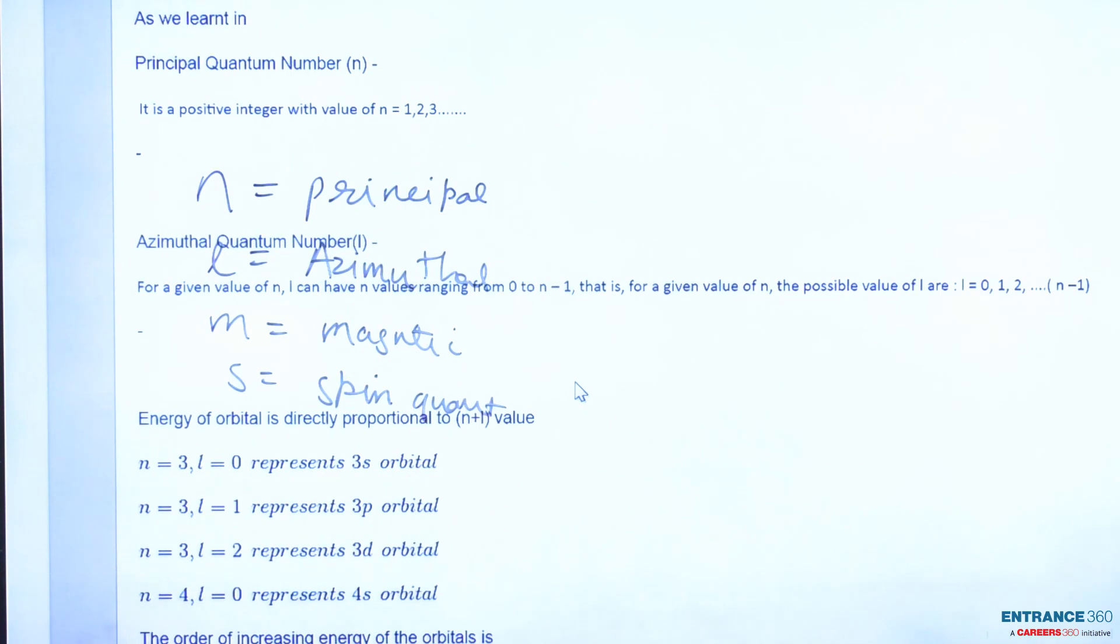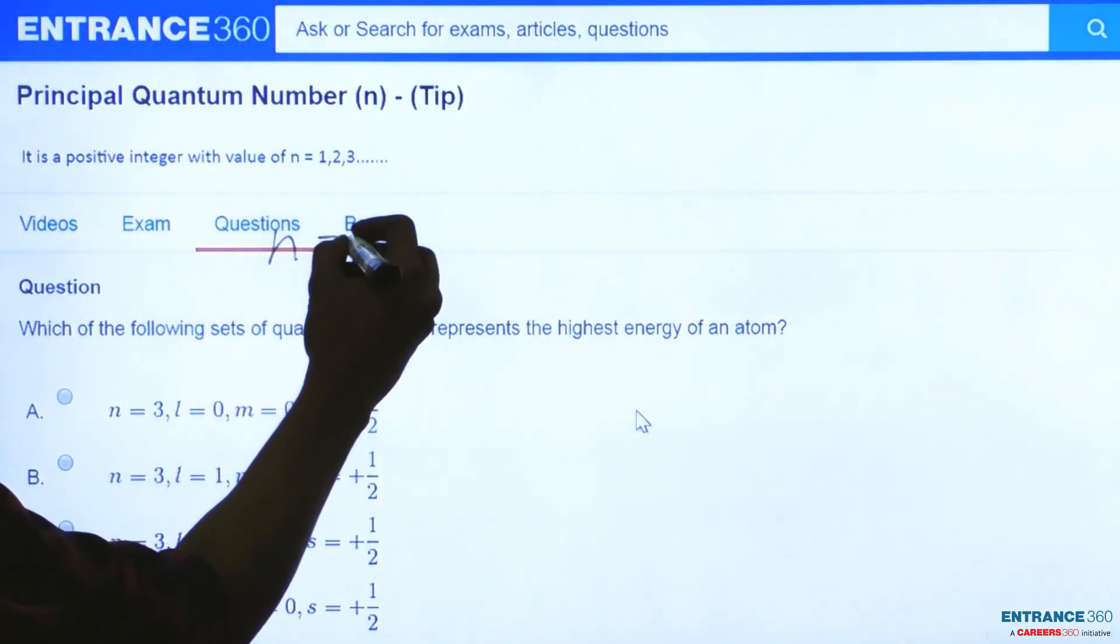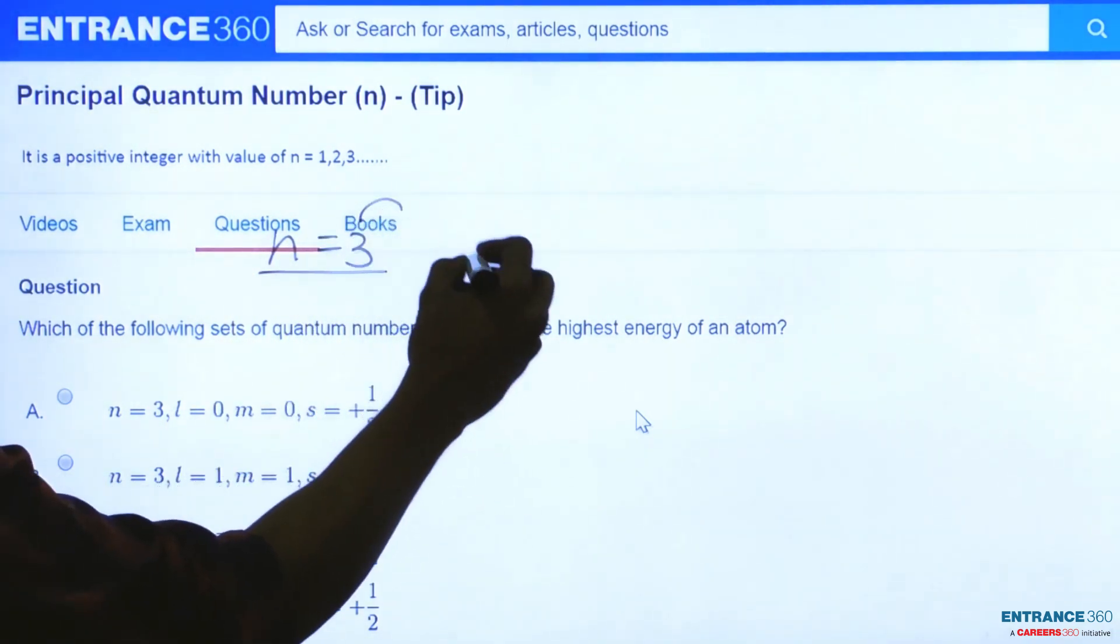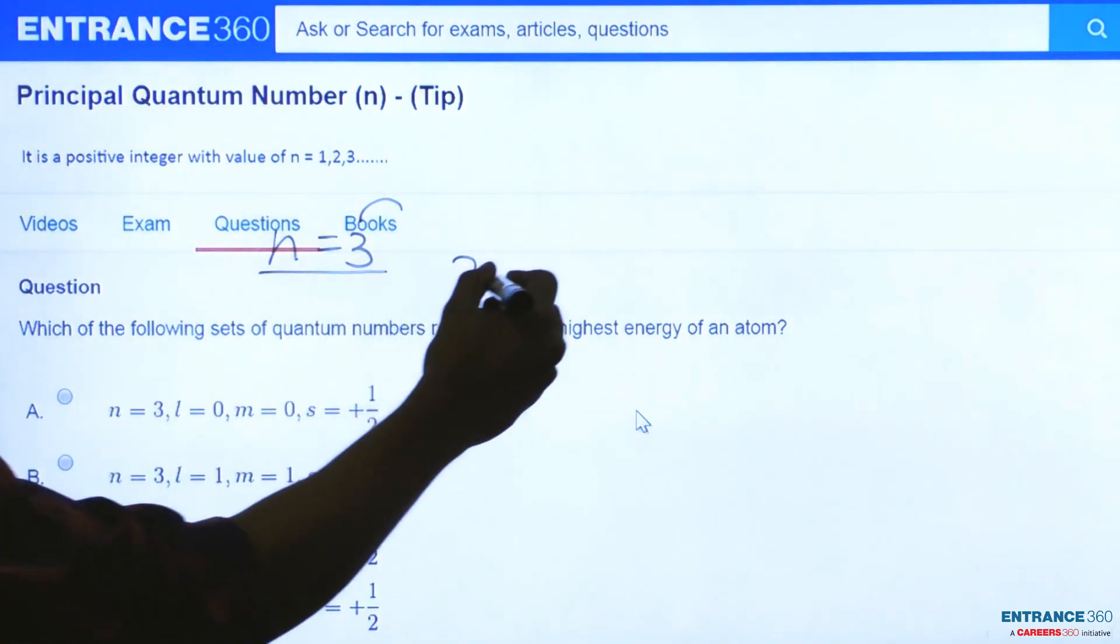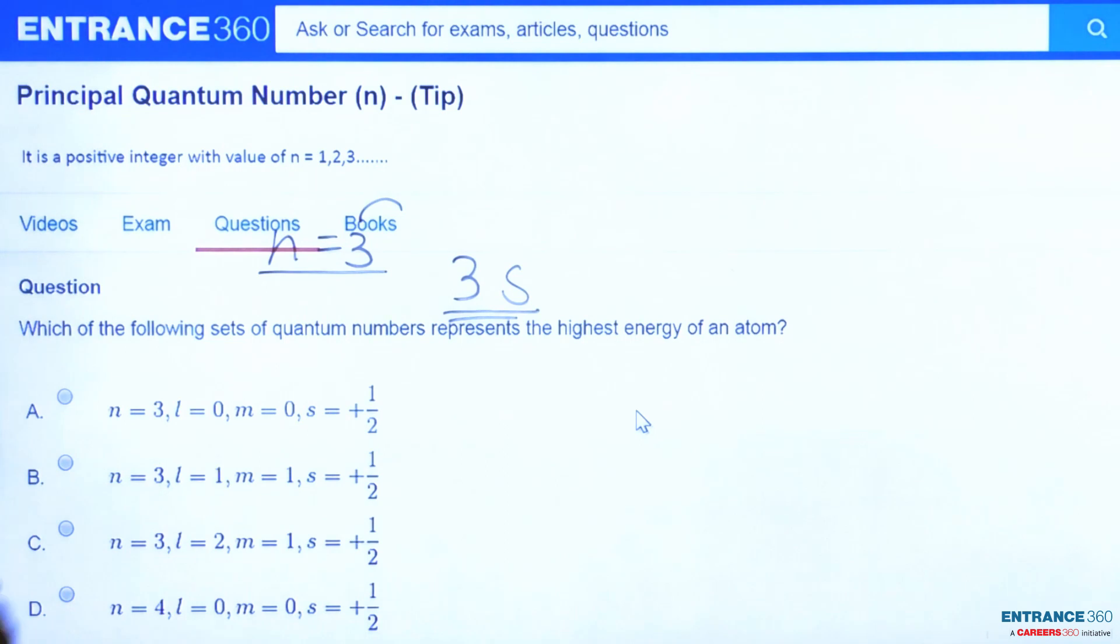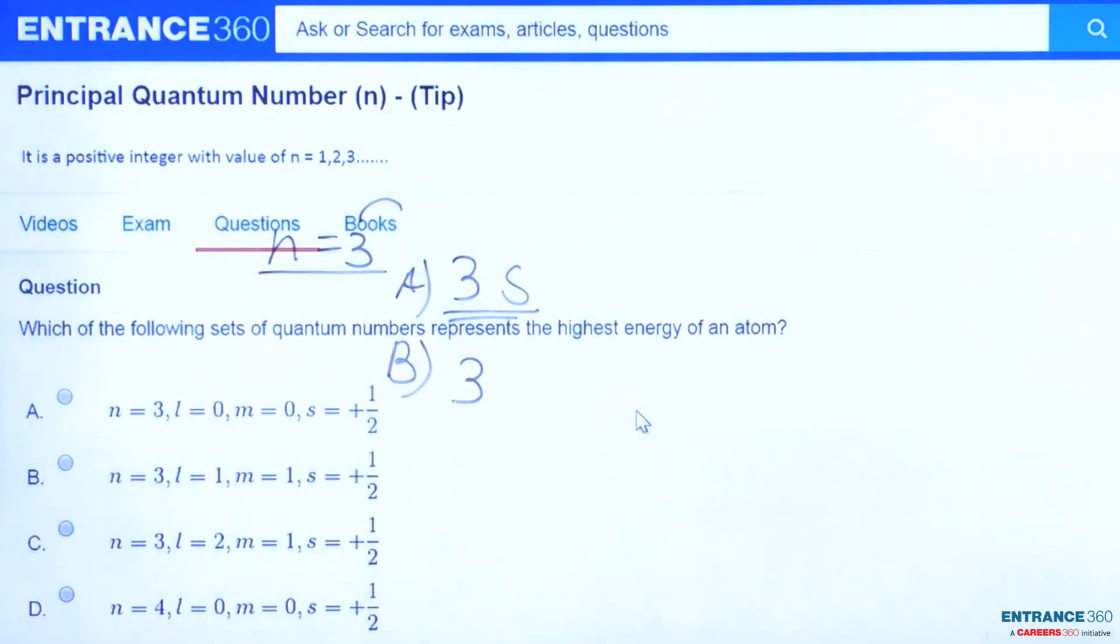For the first option, n is given as 3. From here we can conclude that the shell number is 3. Since l is 0, this might be s orbital, so this is 3s orbital. For the B option, n is 3 and l is 1, which is for p orbital, so this is 3p orbital.